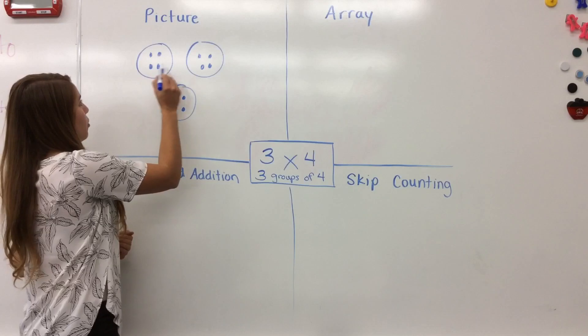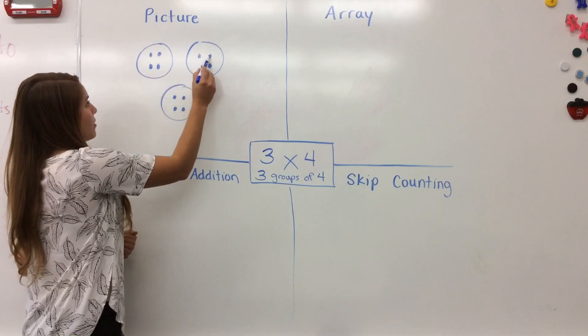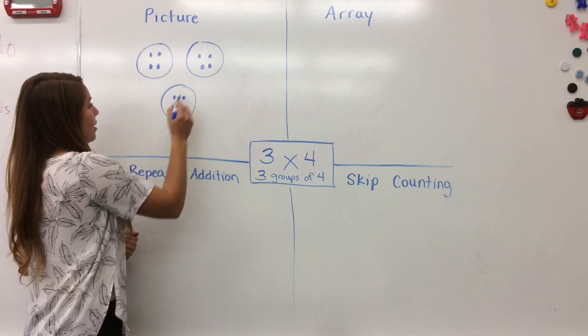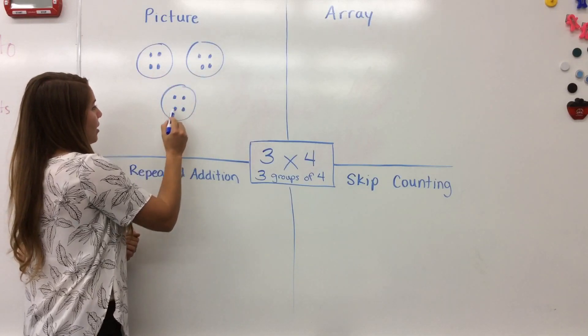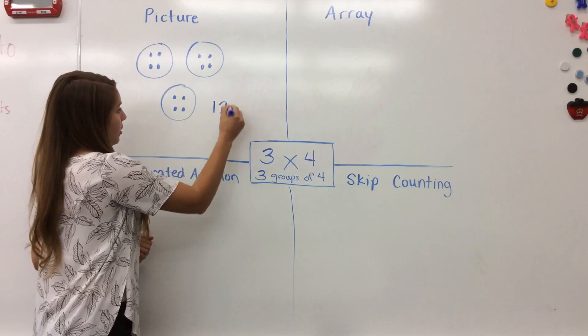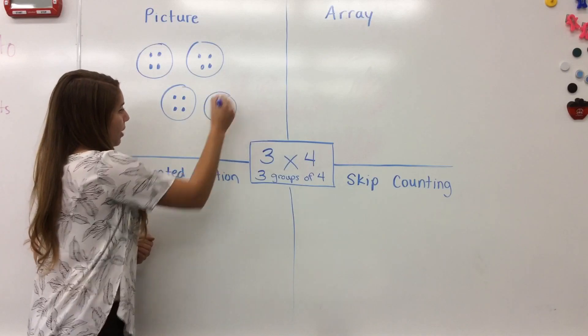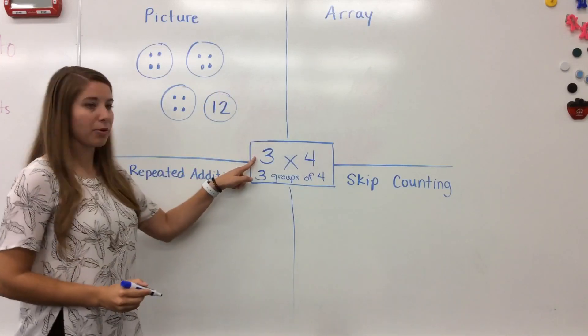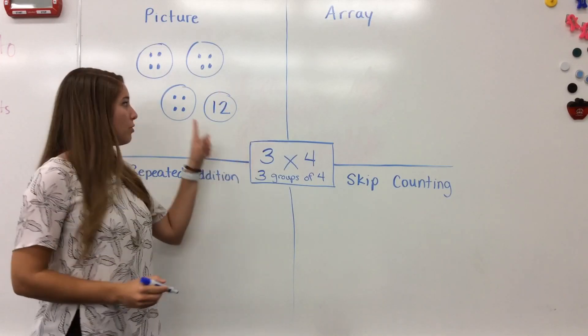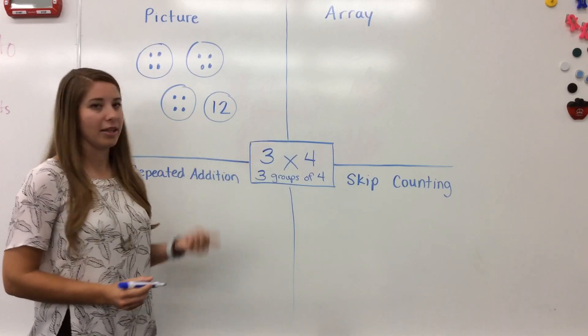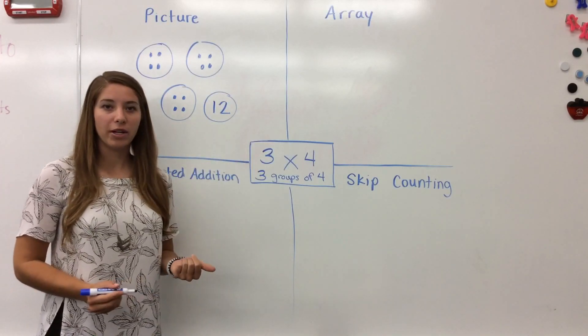Counting all the dots: one, two, three, four, five, six, seven, eight, nine, ten, eleven, twelve. So there is my answer to the problem three times four — using a picture, I get the answer of twelve.